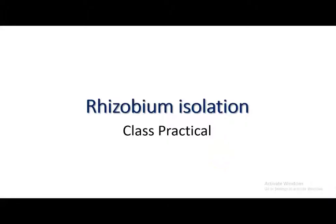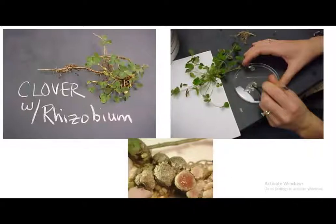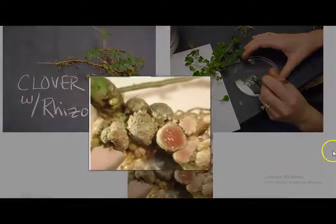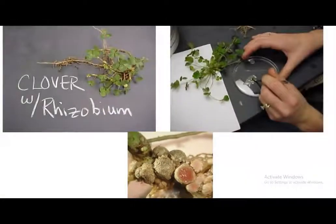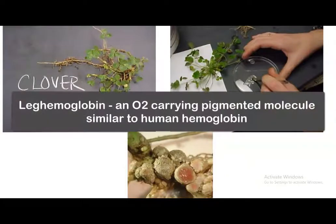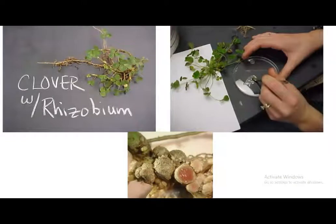Now we look at points related to Rhizobium isolation. You need to collect a sample from any legume plant, carefully separate the nodules, and surface sterilize them using hydrogen peroxide, mercury chloride, or 70% ethanol. The nodules taken should be of good quality — you can ensure quality by looking for pink coloration, which indicates a high amount of leghemoglobin, making them effective nodules with a high chance of yielding bacteria.